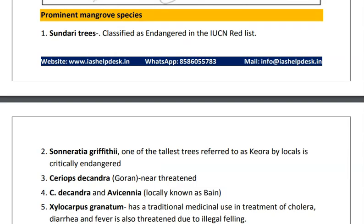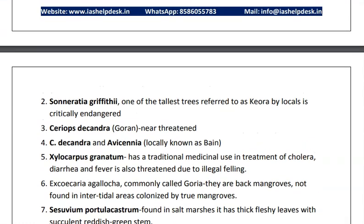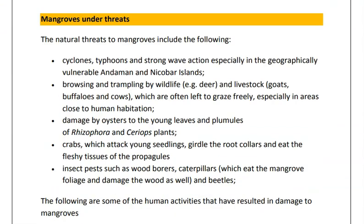The important mangrove species is the Sundari tree — Sundarbans has been named after these trees. They are classified as endangered in the IUCN Red List. Due to natural and anthropogenic activities, mangroves are under threat. Natural threats include cyclones, typhoons and strong wave action — especially due to climate change, the intensity of cyclones is increasing. Overgrazing by livestock and insect pests such as wood borers, caterpillars and beetles also damage the plants.